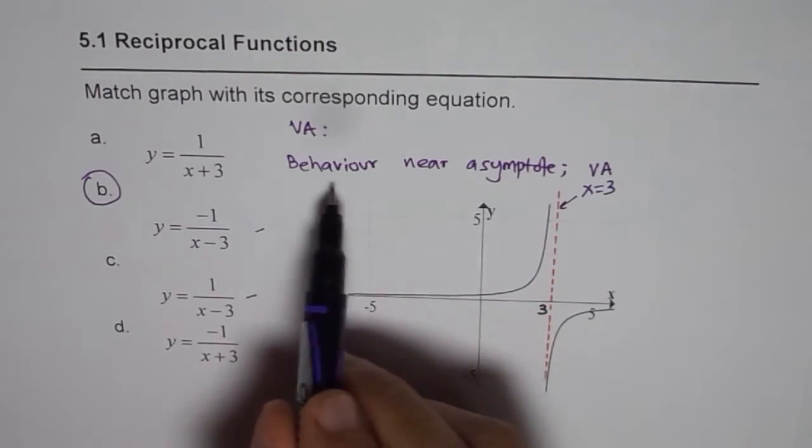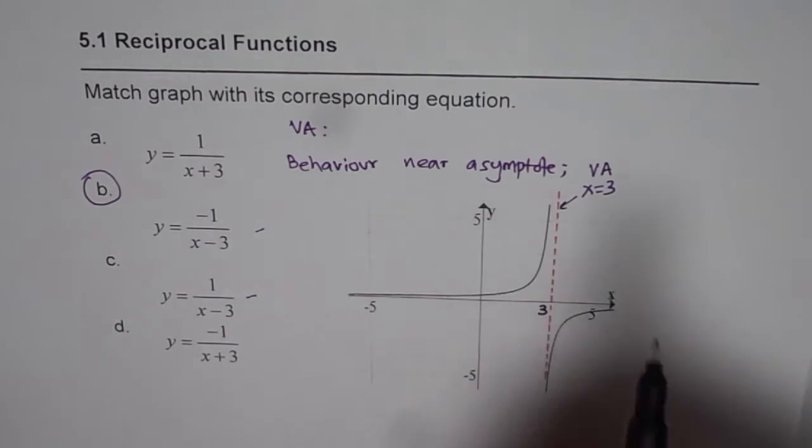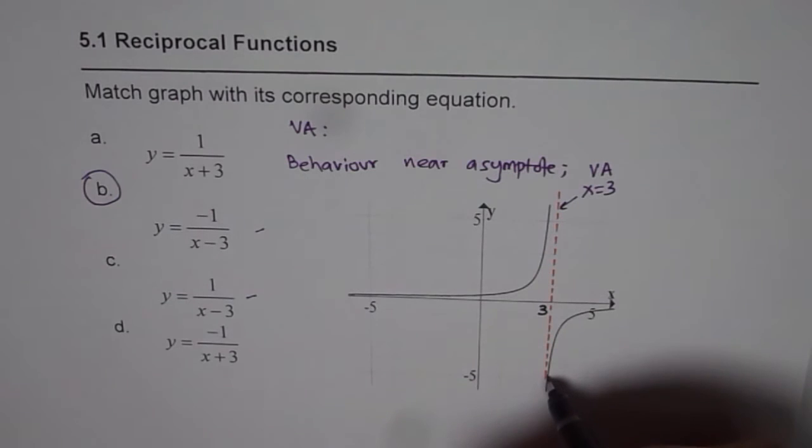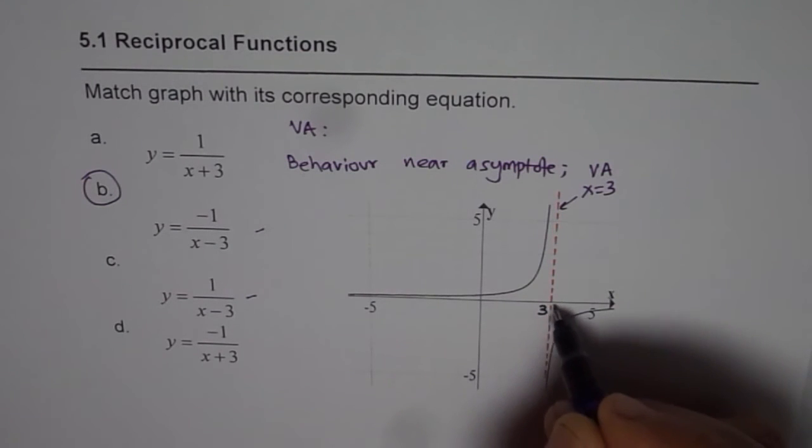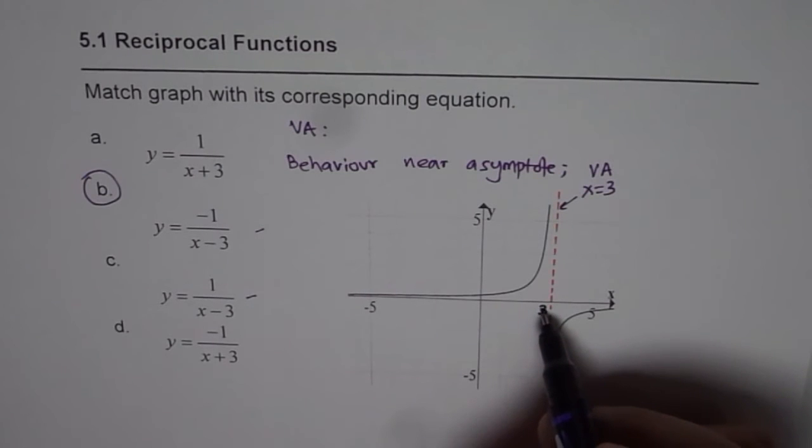So I am trying to introduce you to the term behavior near asymptote. That means we are looking for a point very close to the asymptote on either side of 3. So if I take a point which is less than 3, let's say 2.9, then I should expect a positive high value.